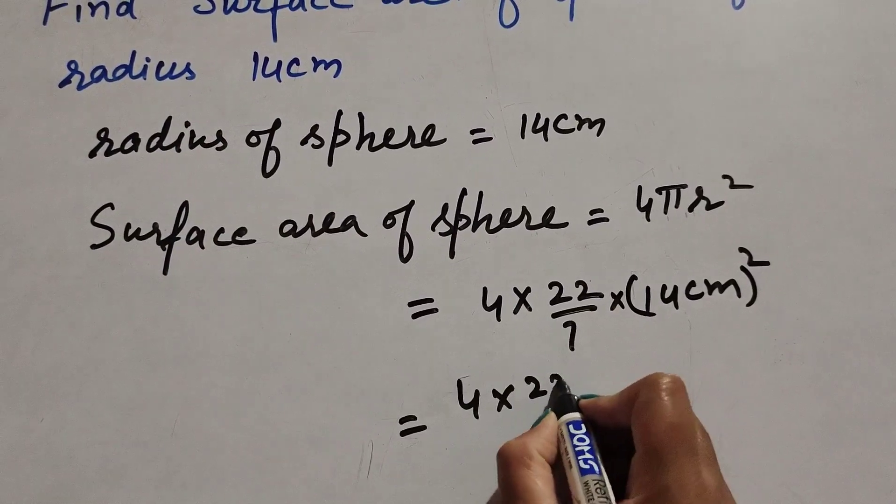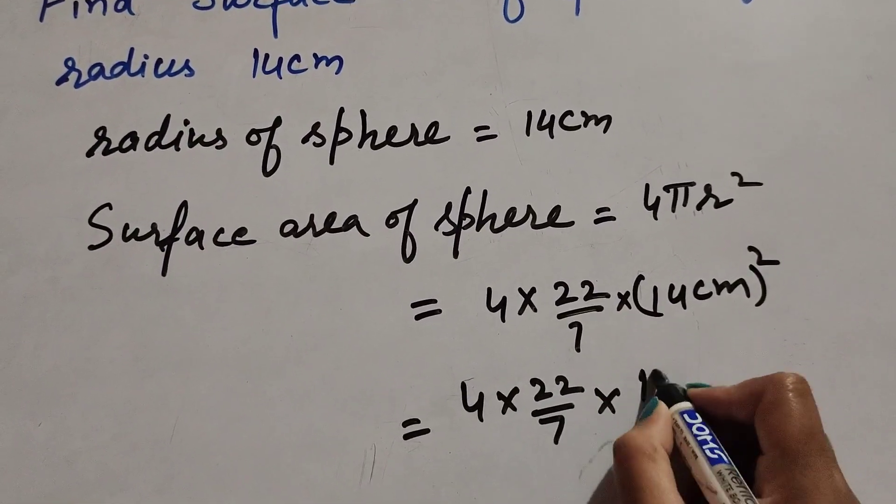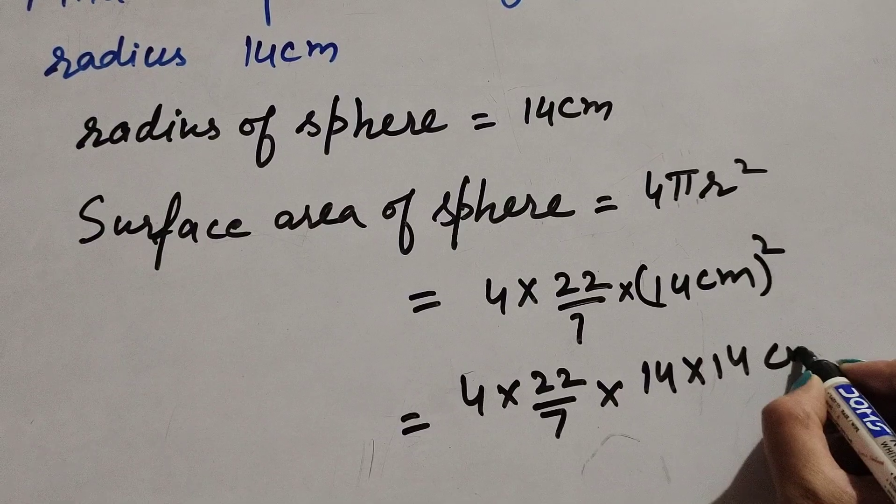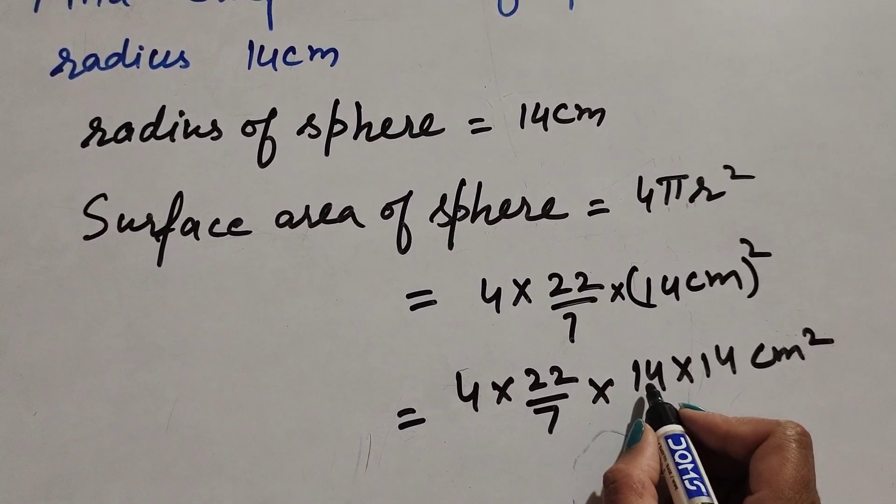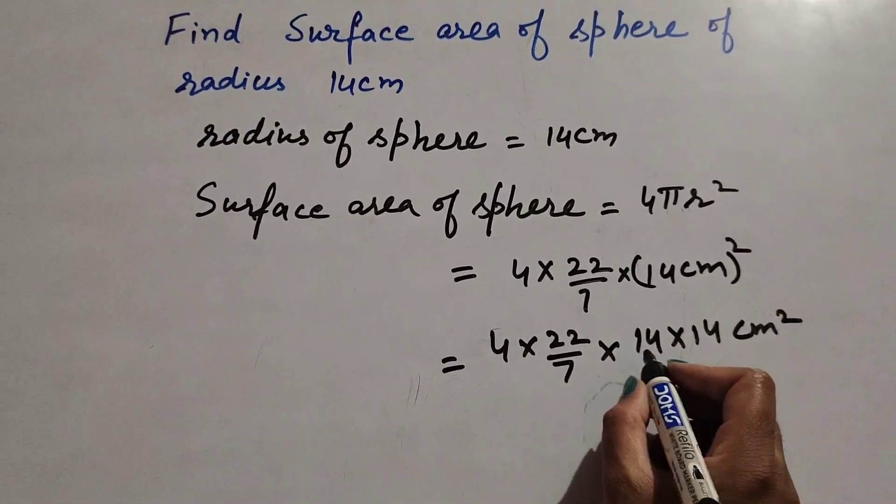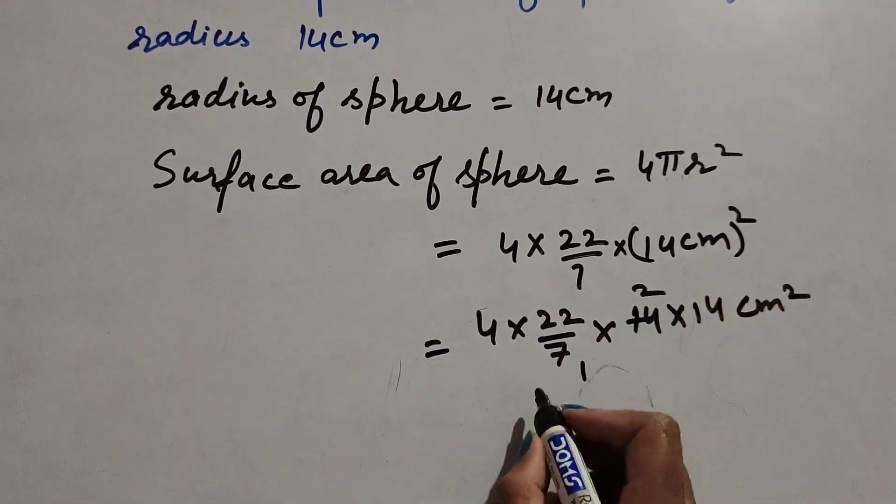4 × 22/7 × 14 × 14 cm². Since 7 and 14 are both divisible by 7, we cancel them. 7 ones are 7, 7 twos are 14.